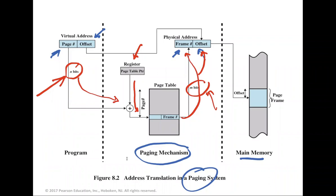Address translation in virtual paging is straightforward, similar to simple paging. The difference is that some process pages may be in main memory and some in virtual memory. We extract the page number from the virtual address, add it to the page table pointer pointing to the page table's starting address, retrieve the frame number at that index, then amend the offset to the frame number to extract the physical address in main memory.